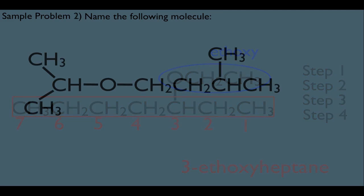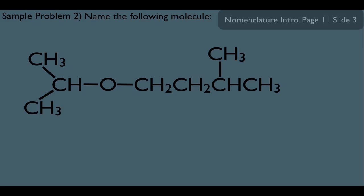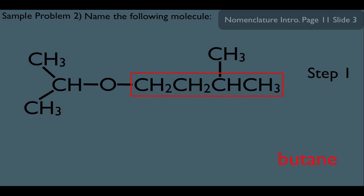Now let's look at another sample problem here. What's the name of this ether? Well, step one, let's find the longest side here. In this case, it would be this side of the oxygen. And if you see you have four carbons in that box, that makes this butane.